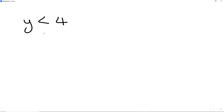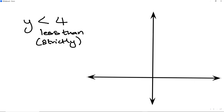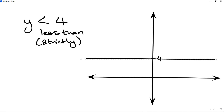The next one uses the broken line. We have y is less than 4 — strictly less than 4, not equal to. Go to the Cartesian plane and grab 4 from the y-axis. Now draw a dotted line, not a solid line. A solid line is used when it's less than or equal to; a dotted line is for strictly less than.